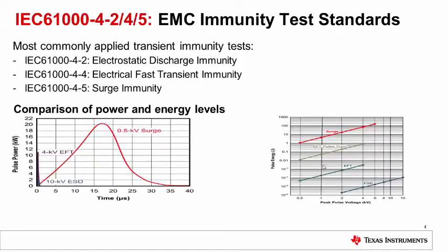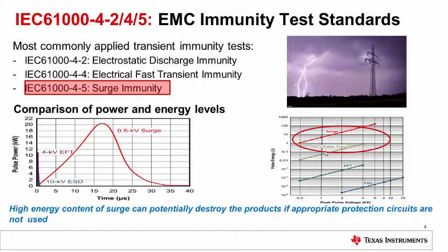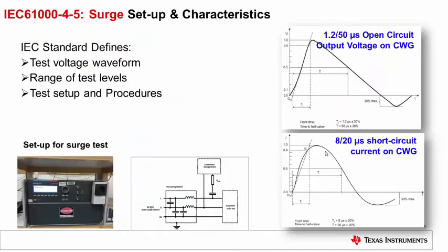Comparing the power and energy levels of these three test pulses: the surge has the highest pulse power for the longest duration. The surge pulse has approximately 100 times higher energy than an EFT pulse train. Due to this high energy content, electronic systems can get damaged if appropriate protection circuits are not used.